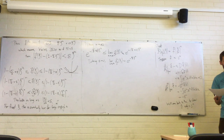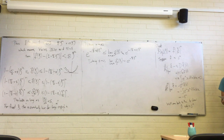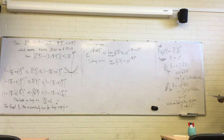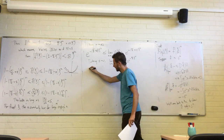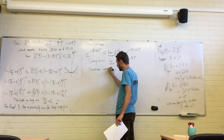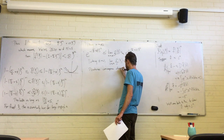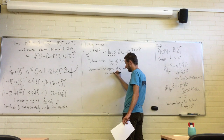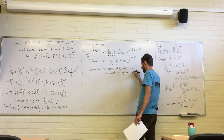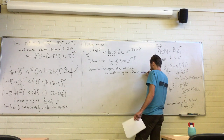So are we done? The final statement was about weak convergence of gn to the Gaussian, and we're not there yet. Pointwise convergence of the Fourier transforms does not immediately imply the weak convergence we're claiming. There's a bit more work to do.